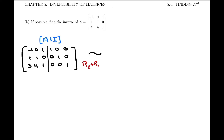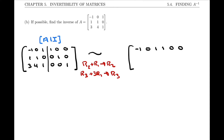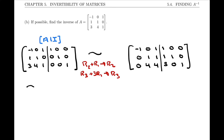Just as in the previous example, I'll do row 2 plus row 1 becomes row 2, and row 3 plus 3 times row 1 becomes row 3. Row 1 is unchanged, row 2 becomes 0 1 1 | 1 1 0, and row 3 becomes 3 −3 0 | 4 4 3 0 1. We'll complete the matrix in a couple more steps.